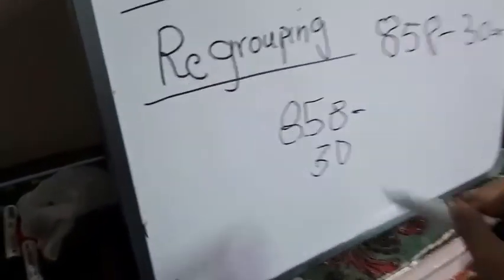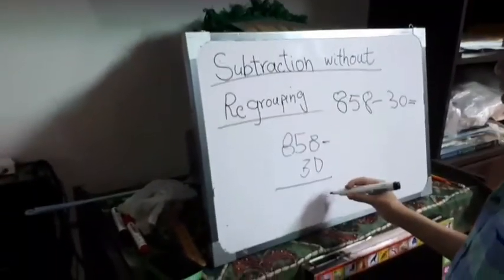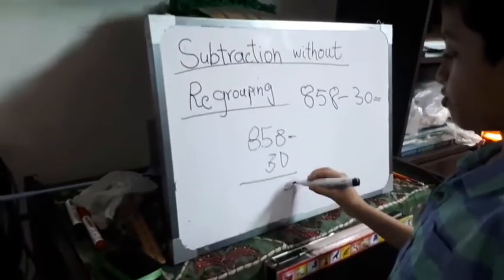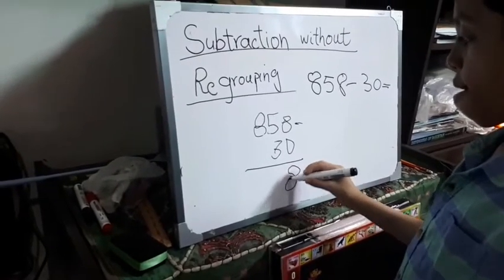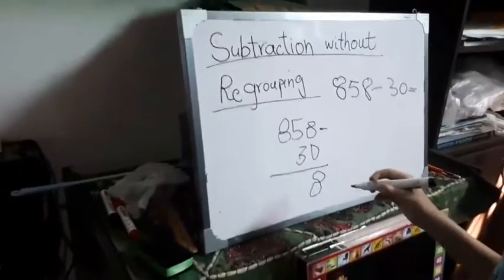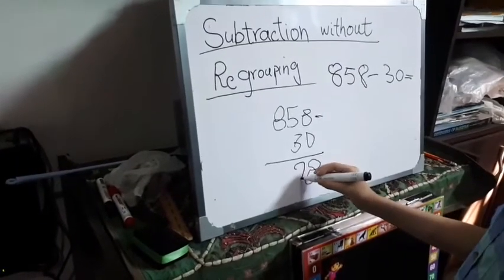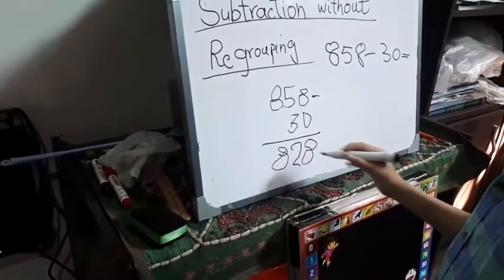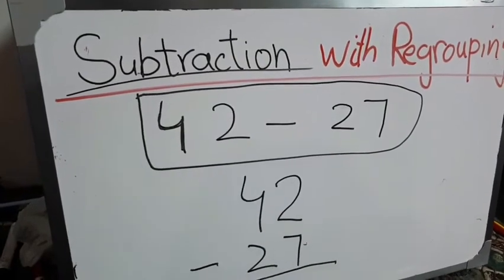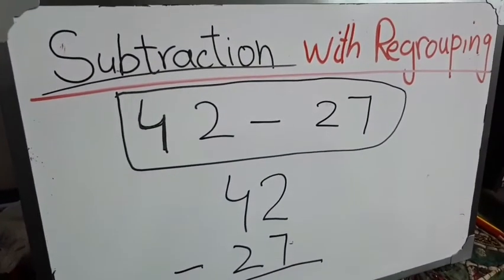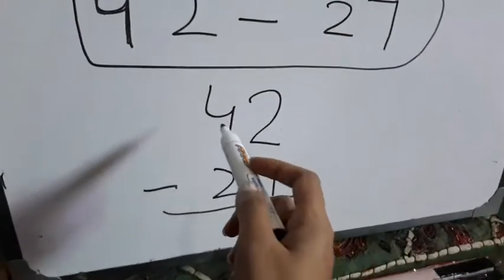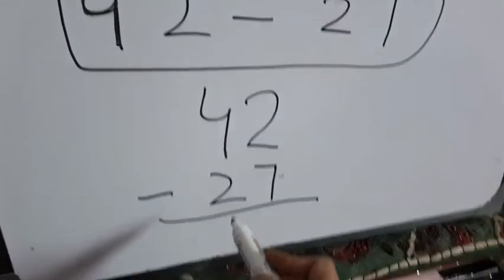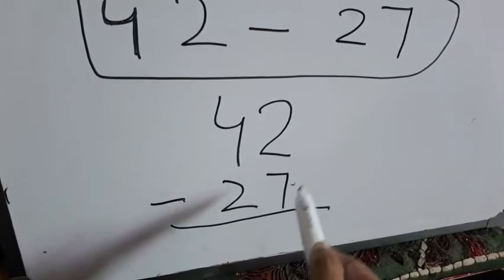Now solve: eight minus zero, five minus three. Drop the eight down. Now we will solve subtraction with regrouping. We have 42 minus 27.